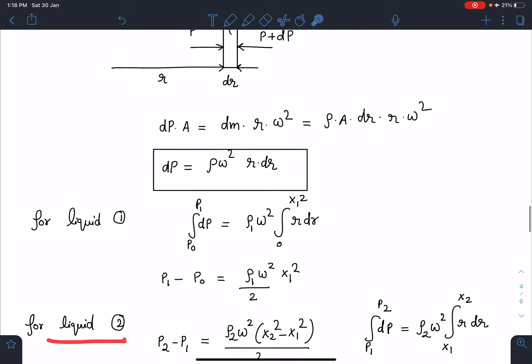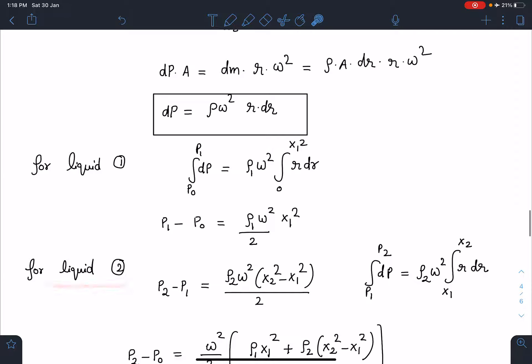Similarly, for liquid 2 now the pressure will start from p1 and it will go up to p2 at secondary interface and limit of x will go from x1 to x2. When I integrate this part you can see the limit goes from p1 to p2 now and this goes from x1 to x2 now and the liquid density becomes rho2. So, when I add I will be writing this p2 minus p1 is equal to rho2 omega square and this will become x2 square minus x1 square by 2.